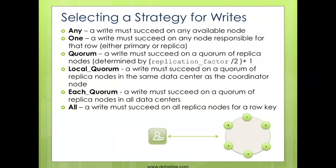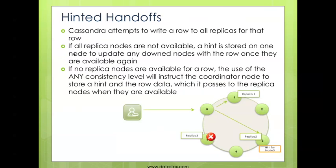Local quorum and each quorum deal with multiple data centers. Local quorum requires a majority response from the data center you're connected to, and each quorum requires a majority from all data centers. Finally, the 'all' option requires a response from all nodes managing that piece of information for the write to be successful.